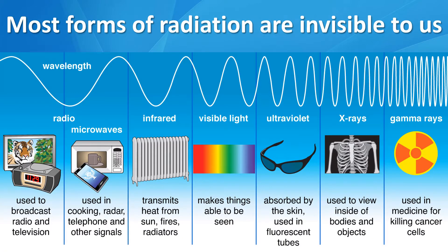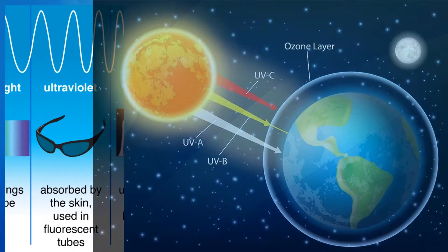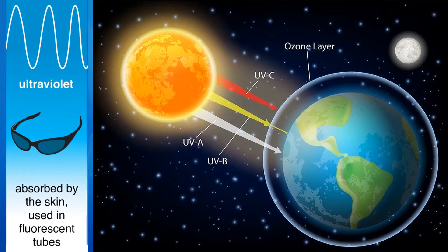Most forms of radiation are invisible to us — for example, radio waves, microwaves, and infrared. We can only see a tiny sliver of the electromagnetic spectrum, which makes up all visible light. For our purposes today, ultraviolet is the most significant radiation.